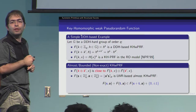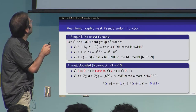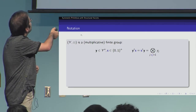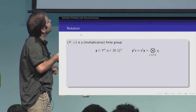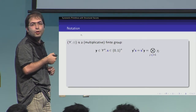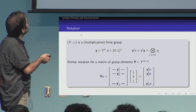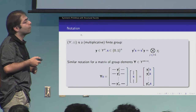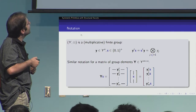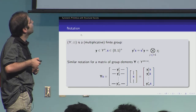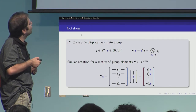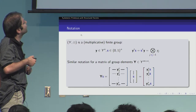Before going into the construction of key exchange from a keyhomomorphic weak PRF, I'll describe some notation. If Y is a vector of group elements and S is a binary vector, I use Y^S (or S^T Y) to denote the subset product over the components of Y indexed by S. This notation generalizes to the setting where Y is a matrix of group elements: Y^S is then a vector whose components are subset products over the rows of Y using the binary vector S.